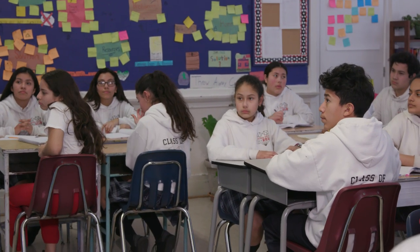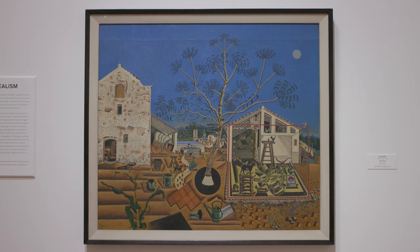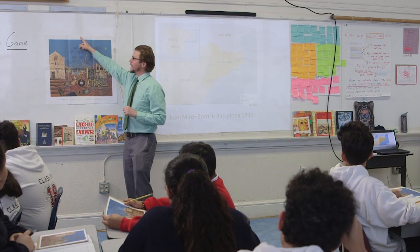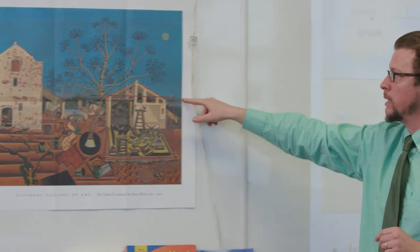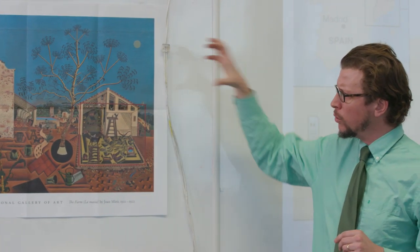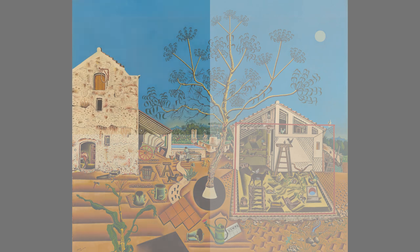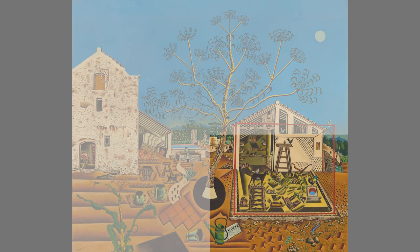We're going to look closely at this painting called The Farm, done by artist Joan Miró. We're going to observe it according to quadrants — imagine drawing a line down the center and another line across the middle, dividing it into four quadrants. I want you to closely observe each quadrant, spend a little time in each, and write down some of the things you see.